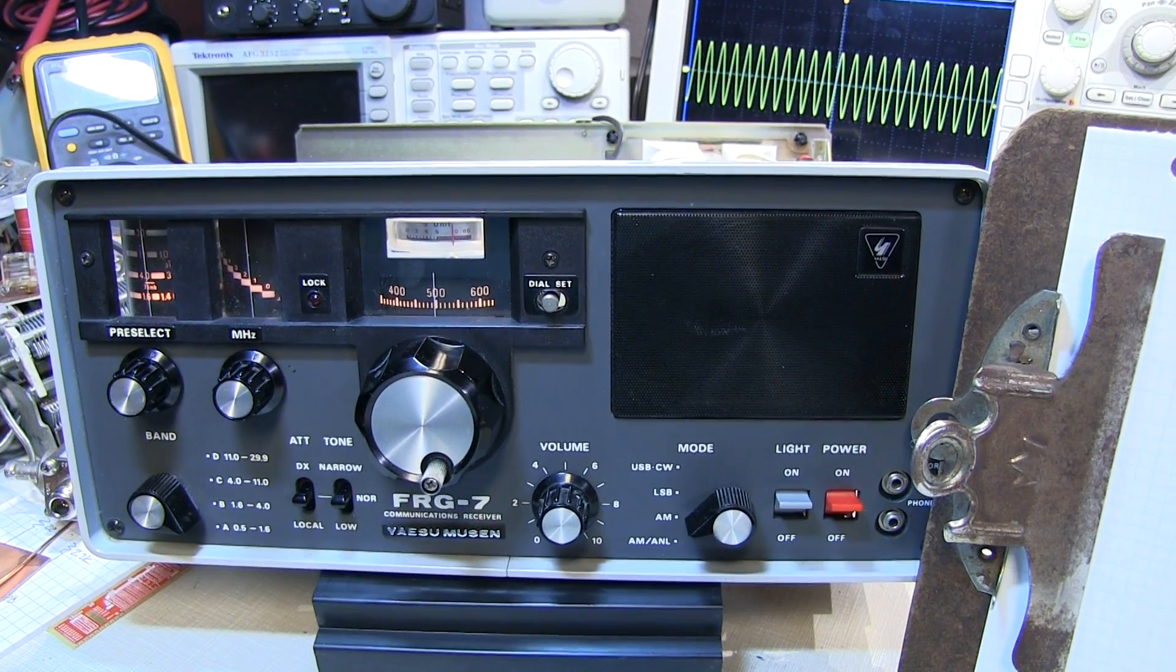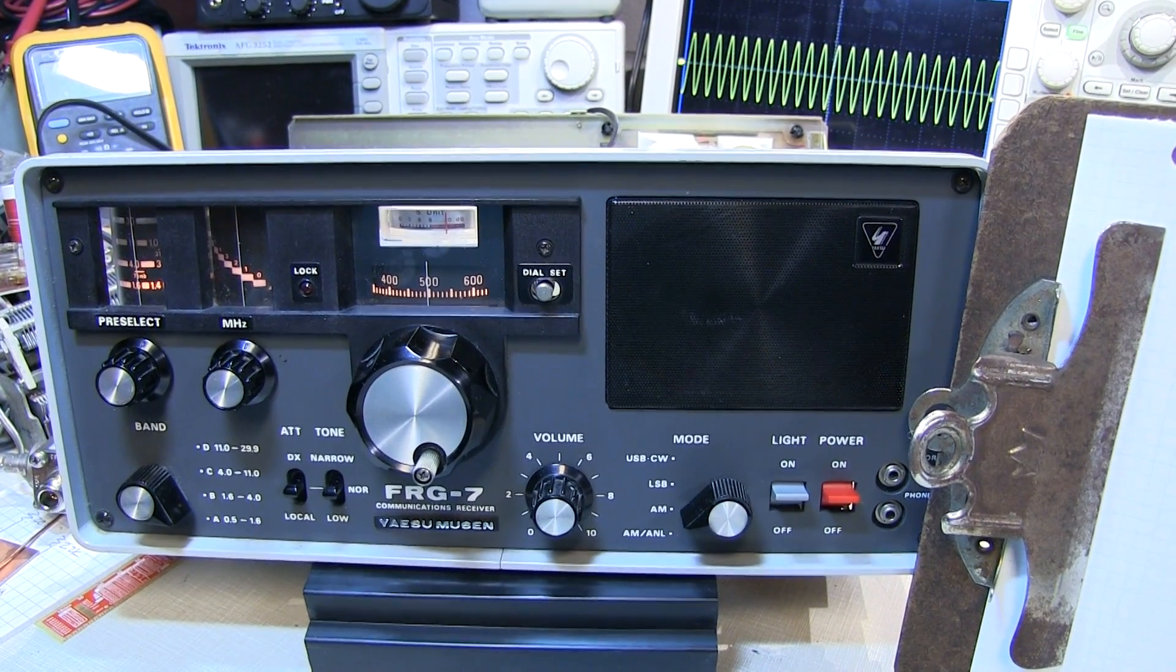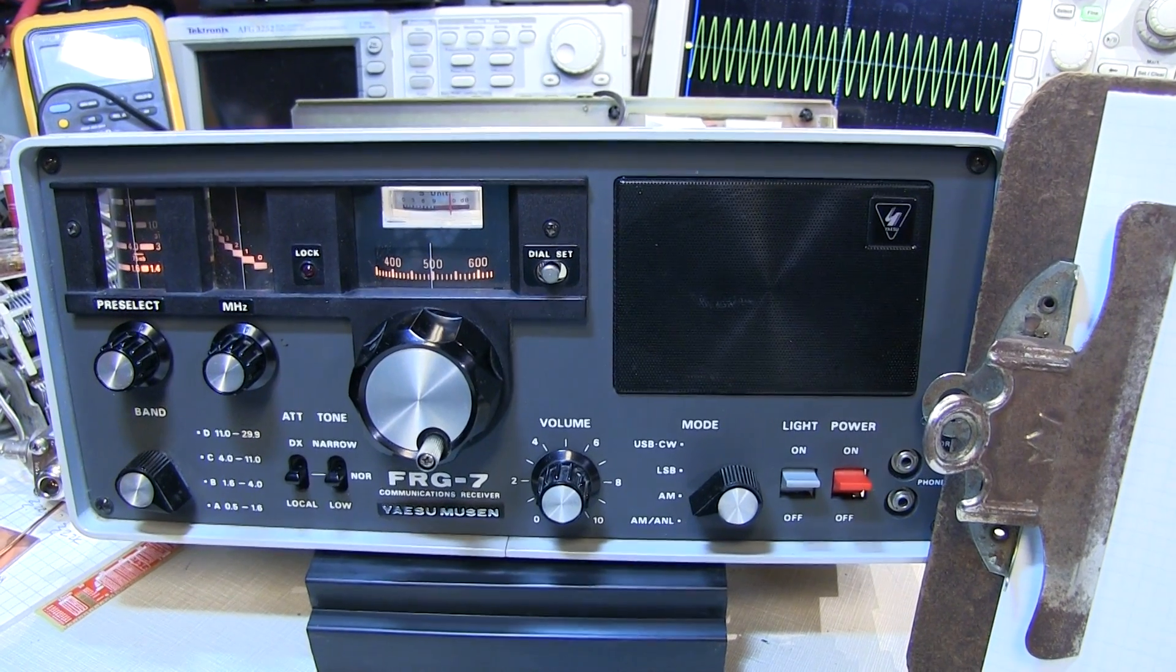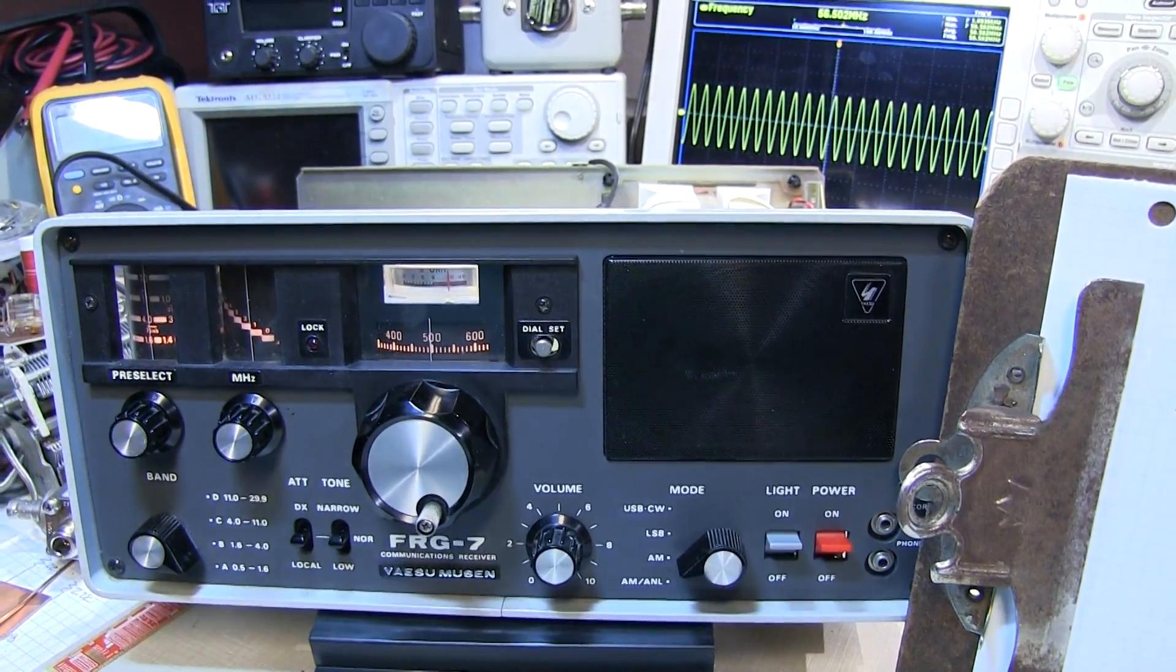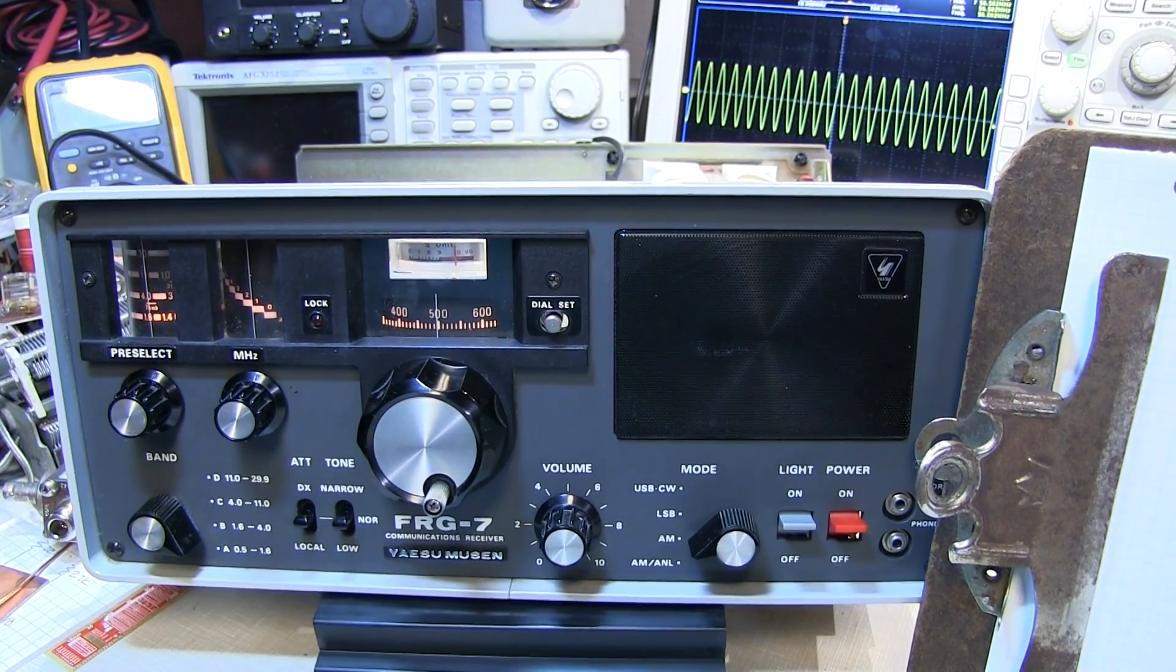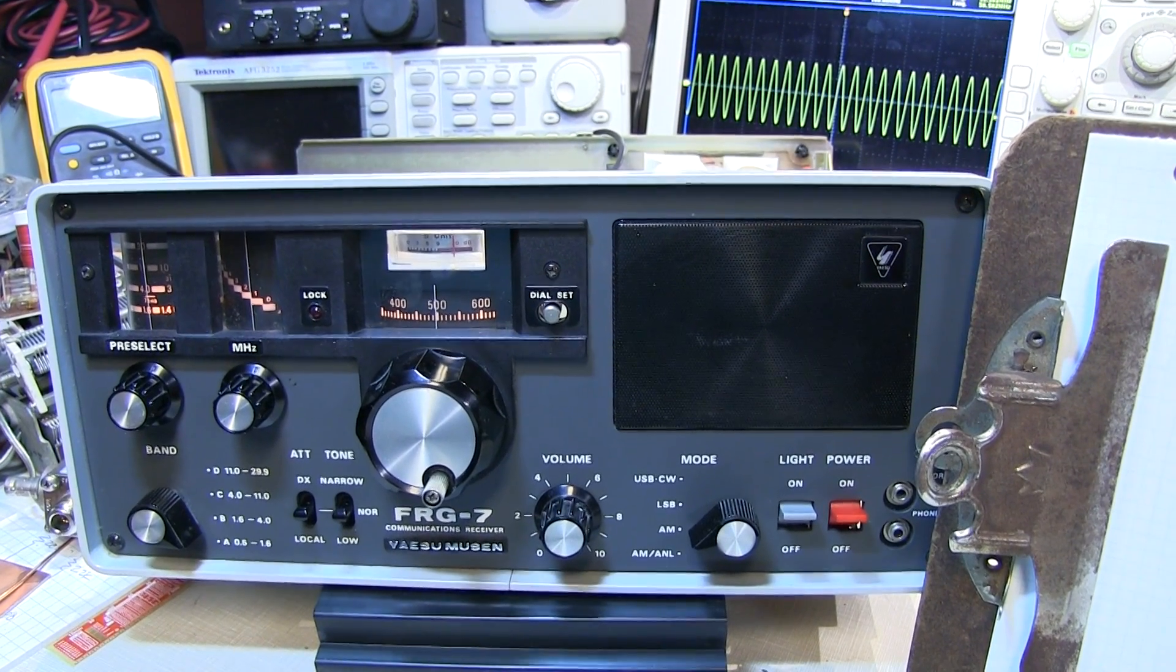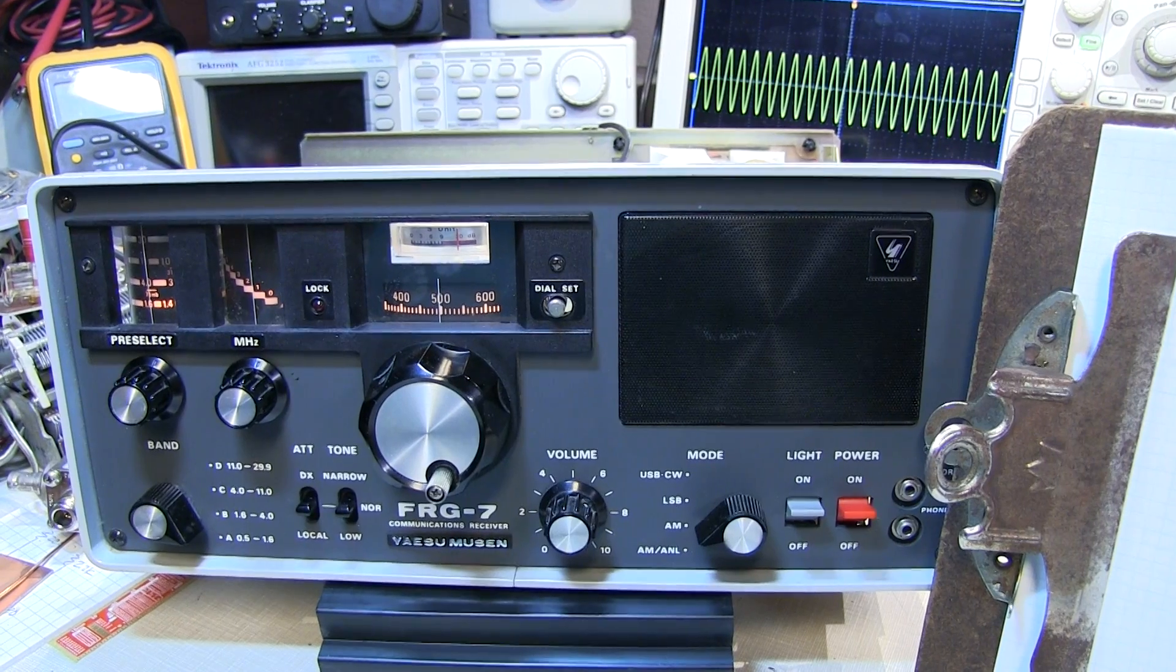On the bench today is this Yaesu FRG7 General Coverage Communications Receiver that belongs to my friend John WA2MOL. This receiver incorporates an interesting architecture called a Wadley Loop that was originally developed by Dr. Trevor Wadley in the 1940s.